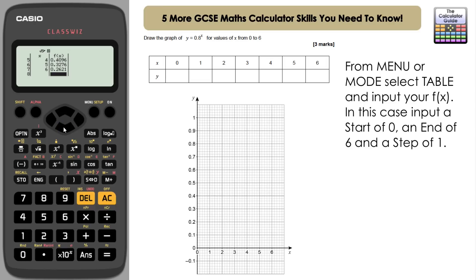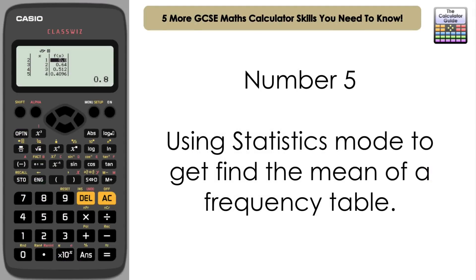We can fill in our table on the question there and then use those points to then go on and plot the graph. The fifth and final GCSE math calculator skill that you need to know is how to use the statistics mode to find the mean of a frequency distribution.